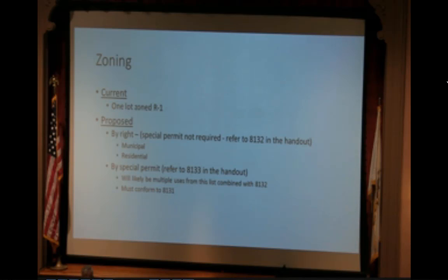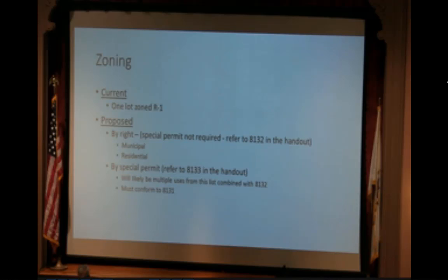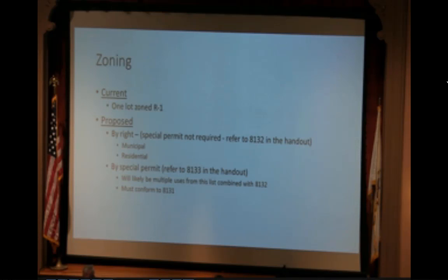By special permit — refer to Section 8133 in the handout — there's a whole bunch of likely uses that the property can potentially be used for. Most likely it's going to be a combination of municipal, residential, and whatever else the town deems best for that property. It would also have to conform with our existing zoning laws, so it's not adding any additional height to buildings or additional setbacks. Whatever zoning ends up on that property will be consistent with what we're used to in Sandwich, whether it be building height, footprint, or permeable areas.